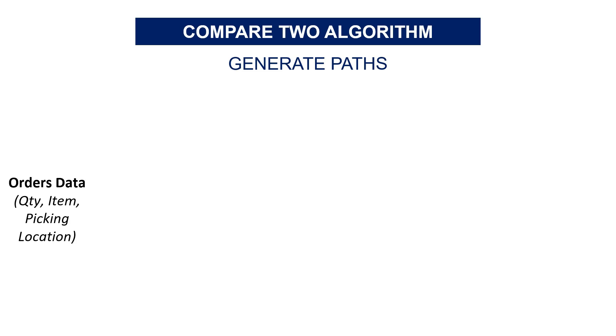In the dataset, you have different orders that your operators need to prepare. So for each order, you have the list of items located in different parts of the warehouse and the quantity you need to pick. You feed the first algorithm, so the heuristic one, with these order lines.